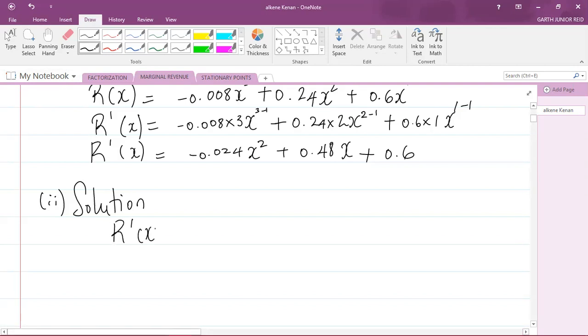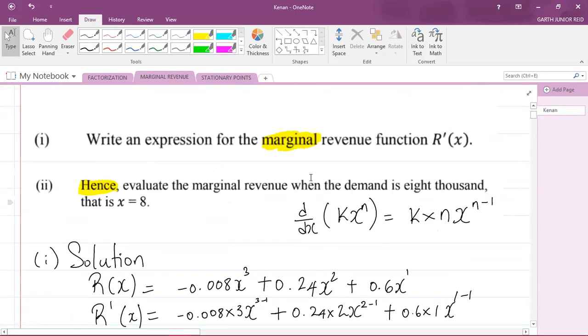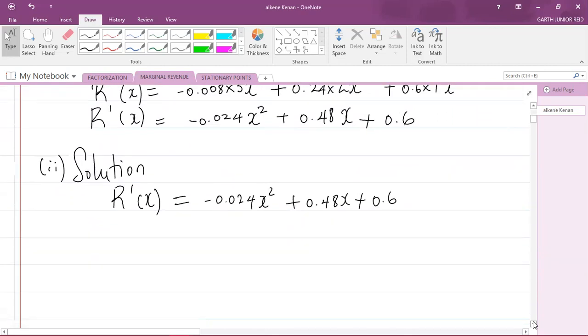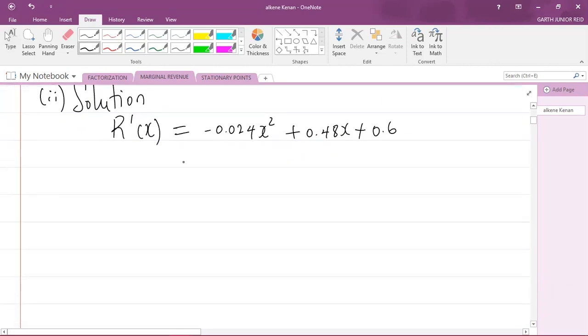So we know that R'(x) is equal to negative 0.024x squared plus 0.48x plus 0.6. And the question says, evaluate the marginal revenue when the demand is 8,000, that is when x equals 8. So I'm basically substituting x as 8 into the marginal revenue function here. So I want R'(8).